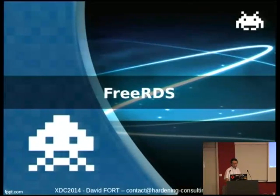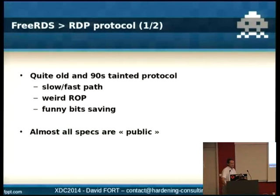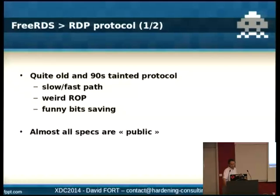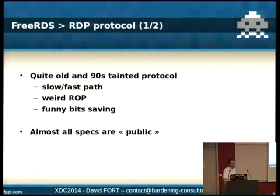So let's start with FreeRDS. FreeRDS is a pure RDP server. Perhaps you don't know what RDP is — RDP is a Remote Desktop Protocol, it's a Microsoft thing, it's quite old. When you read the spec you can really feel it was written in the 90s. You have that slow path which is really inefficient to send data, and a fast path that is more modern. You have plenty of raster operations. I think Microsoft tried to map what they have in their GDI to the protocol. You have funny bit saving — in some parts of the spec they tried really hard to save bits, and in other places they waste space. You can feel it was not written by a single person.